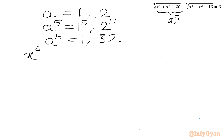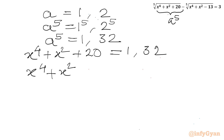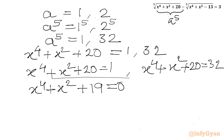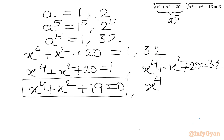From the first: x⁴ + x² + 19 = 0 — this is a quadratic in x². From the second: x⁴ + x² − 12 = 0. Since these equations are quadratic in x², we can apply the discriminant calculation and quadratic formula directly.